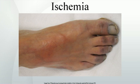Lack of blood flow to a limb results in acute limb ischemia. Reduced blood flow to the skin layers may result in mottling or uneven, patchy discoloration of the skin.